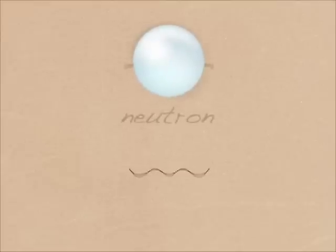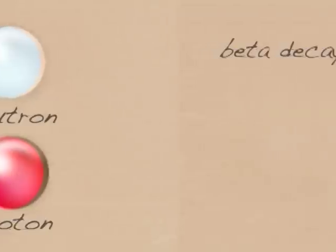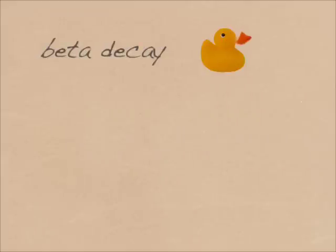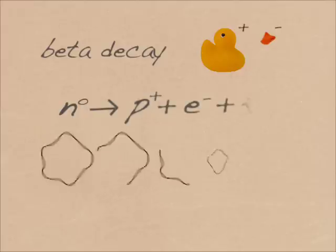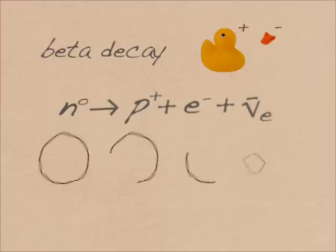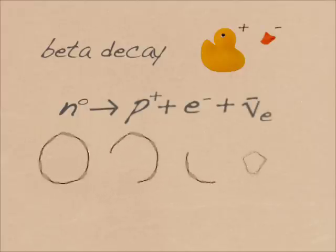One frequency produces a neutron, another a proton. What happens when these particles change or interact with each other, as in the beta decay of a neutron? Physicists use the properties of strings to model these interactions.